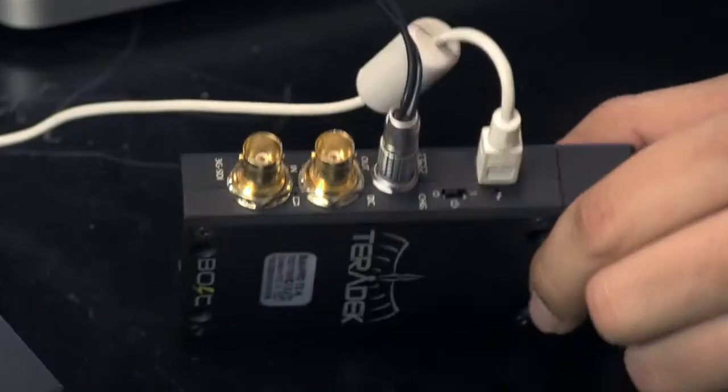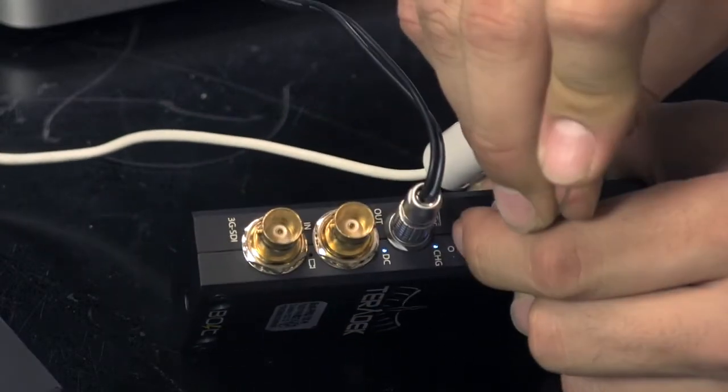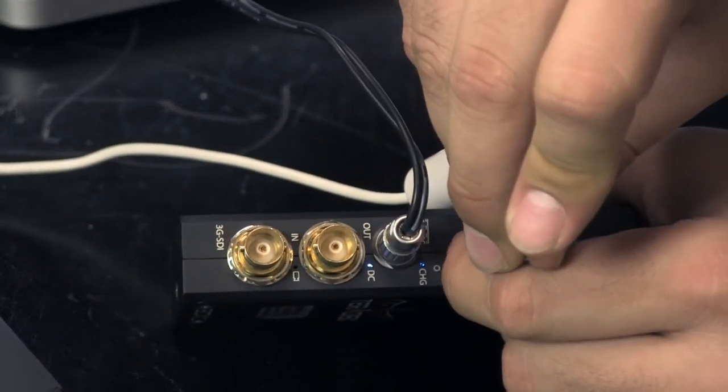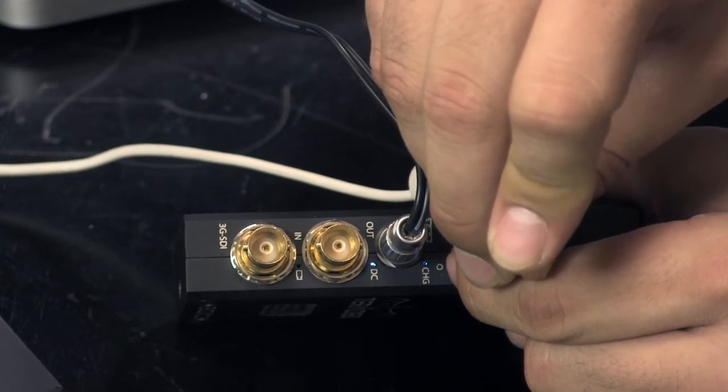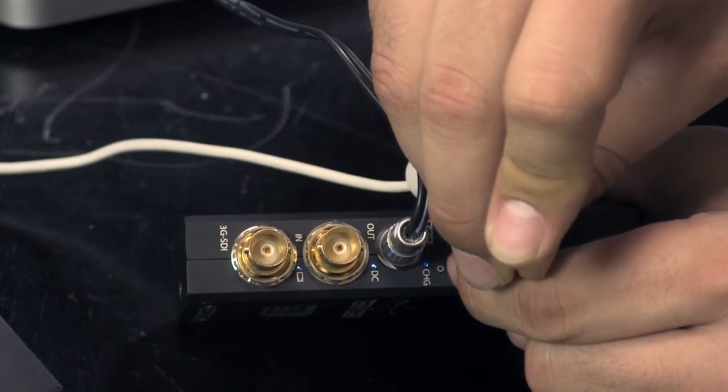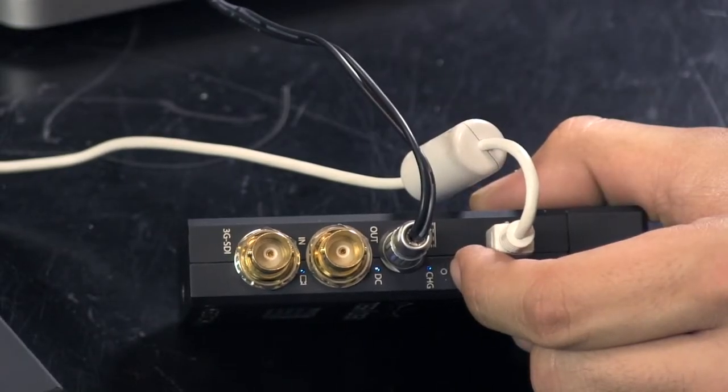Now, hold the reset button while turning the bolt switch on. Keep the button held for 5 seconds or until the LED blinks rapidly. Release the reset button and click Next.